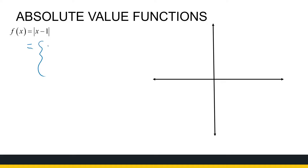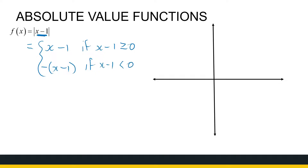What my definition tells me: whatever is between these absolute value lines stays the same if that thing is greater than or equal to zero, and I put a minus in front of it if that thing — whatever is between the absolute value signs — is less than zero. So let's tidy this up. That's x minus one if x is greater than or equal to one. It's minus x plus one if x is less than one.